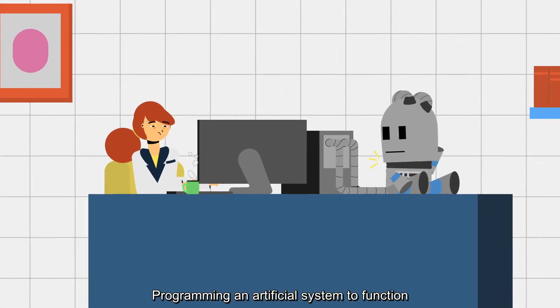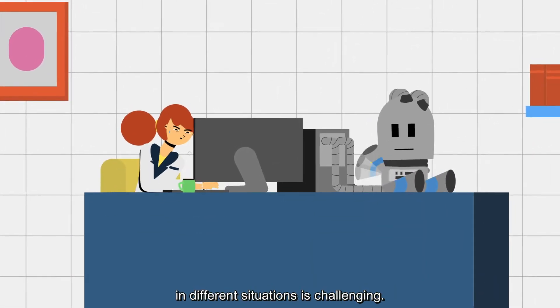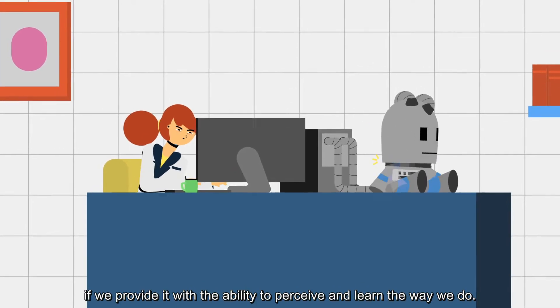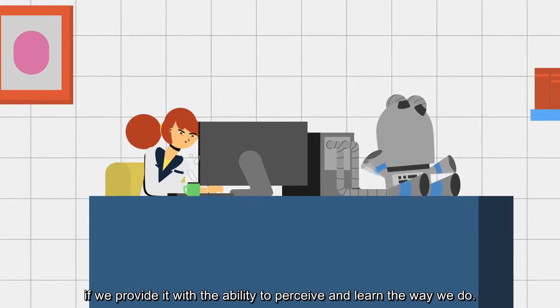Programming an artificial system to function in different situations is challenging. However, this can be facilitated if we provide it with the ability to perceive and learn the way we do.